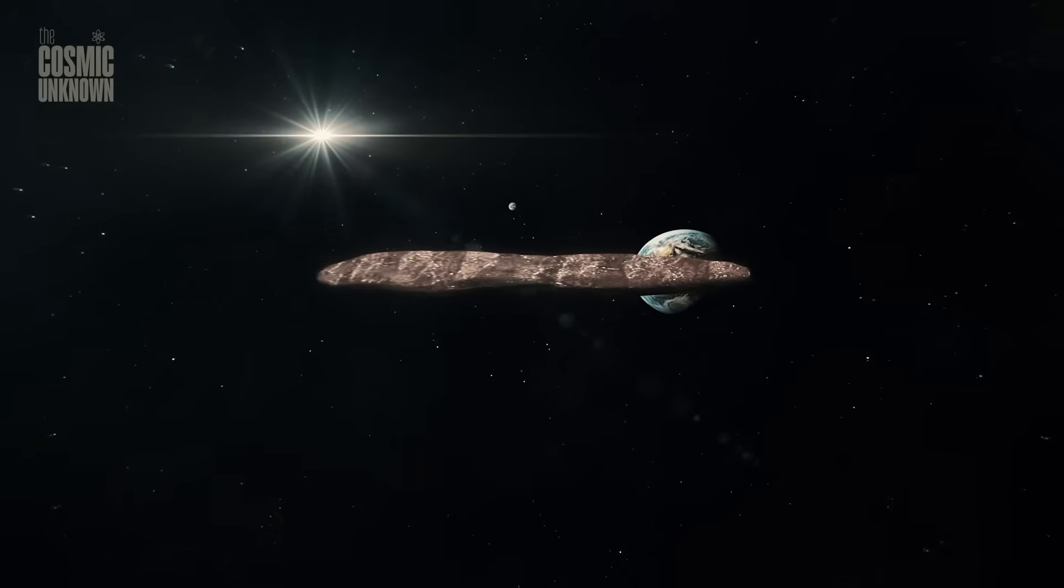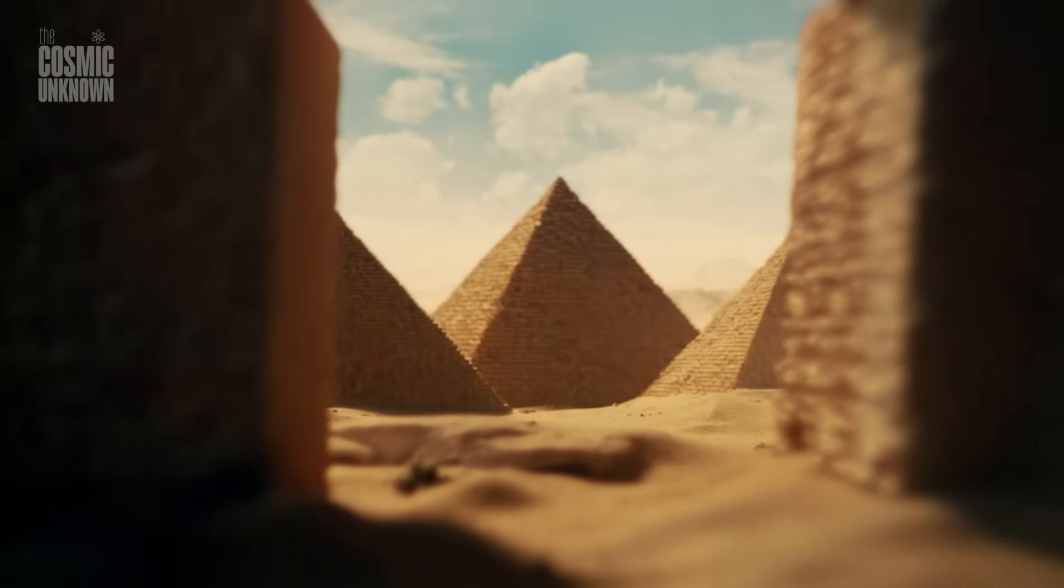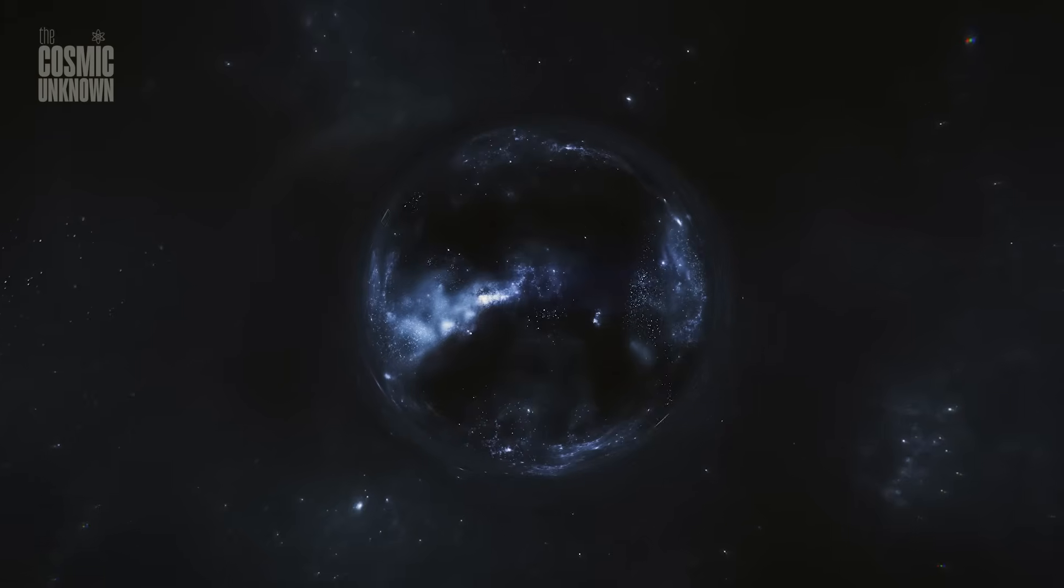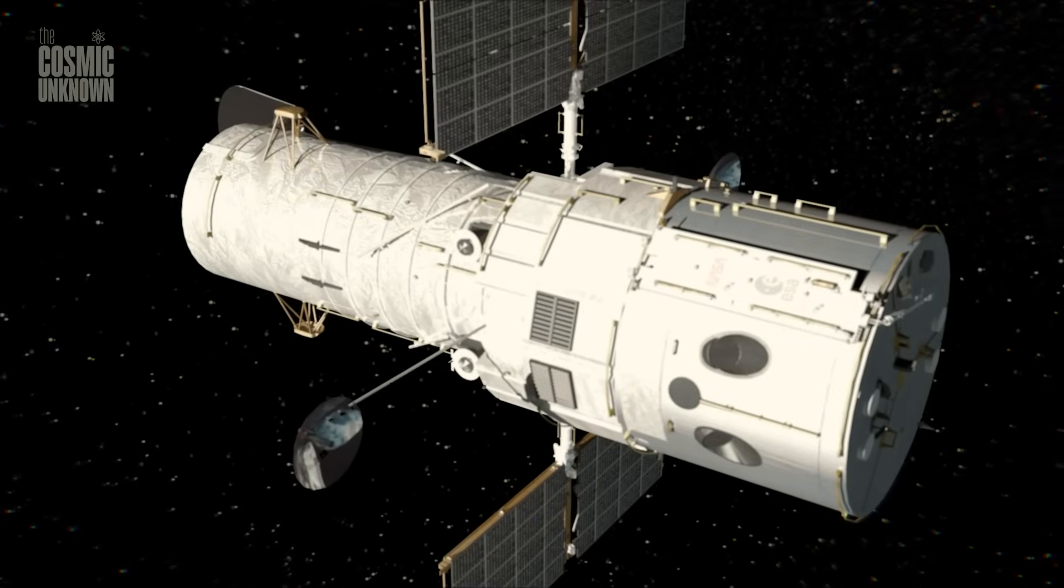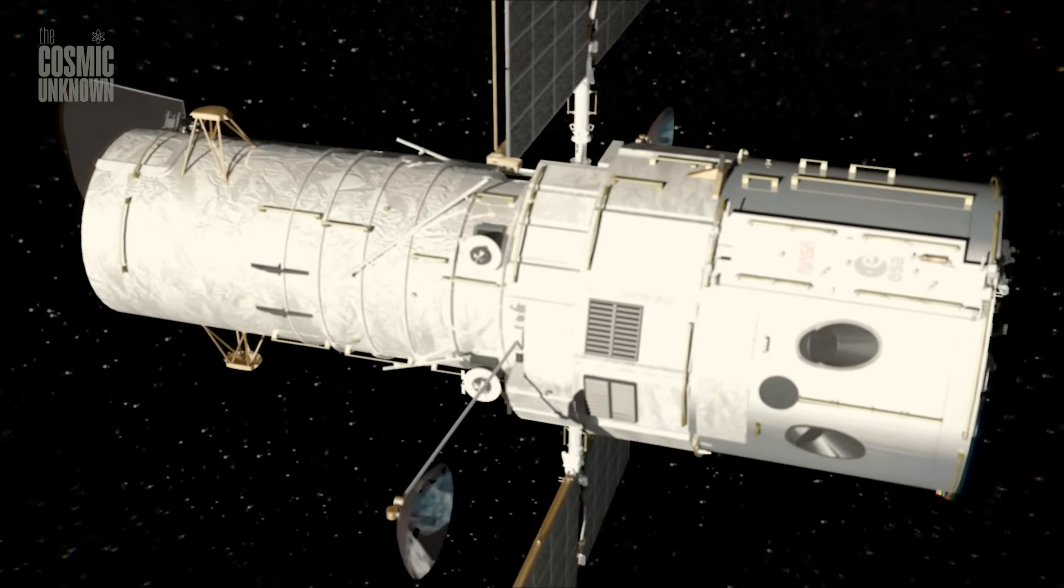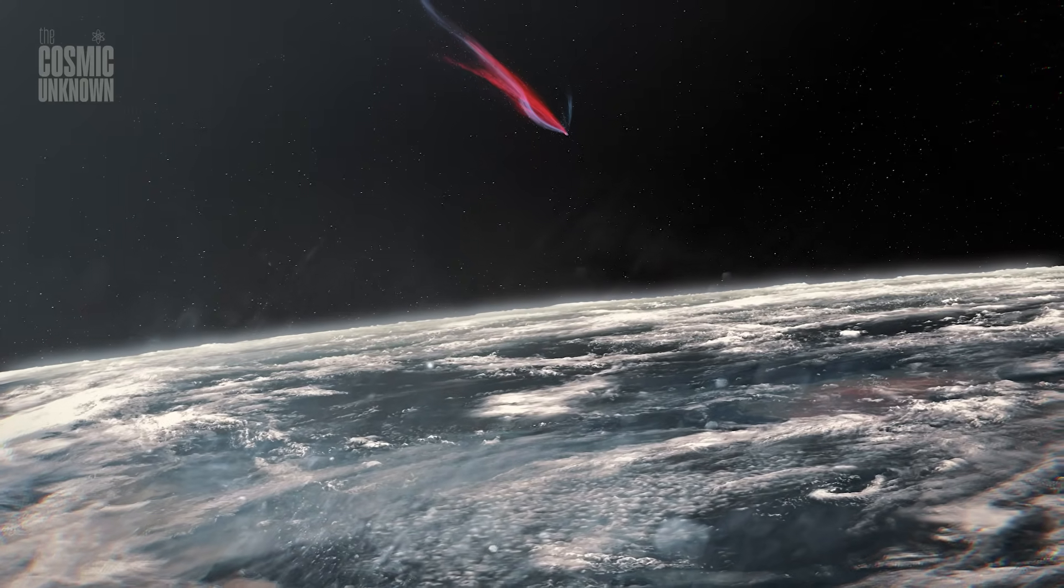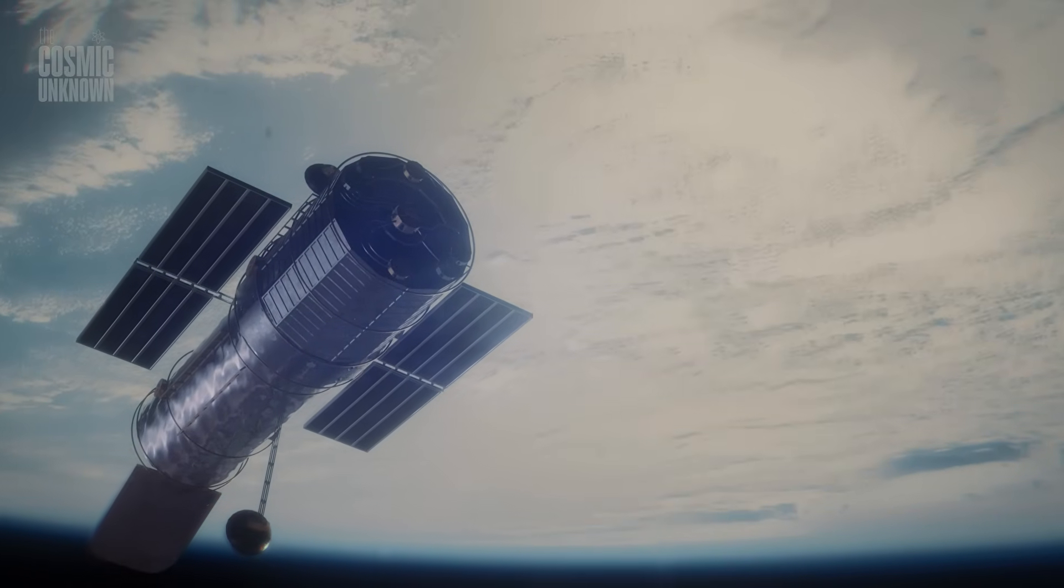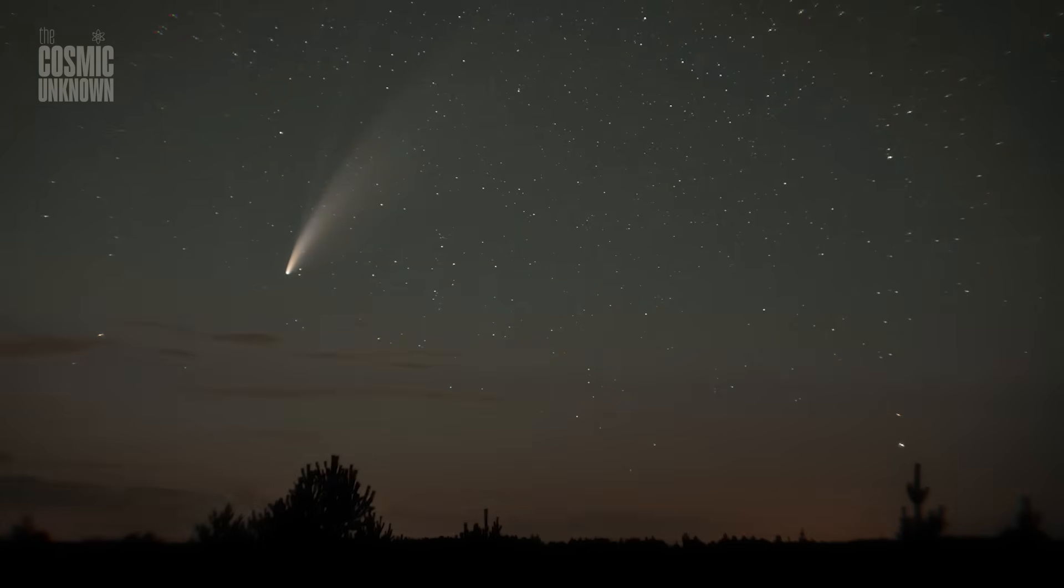July 28th, 2061. It's been here before. When the pyramids were young. When Rome burned. When Napoleon marched. And in 2061, Halley's comet returns again. A visitor bound by rhythm. Every 76 years, it loops through the solar system. A frozen relic, trailing light.